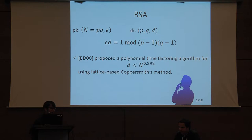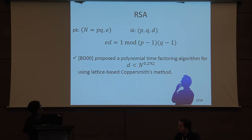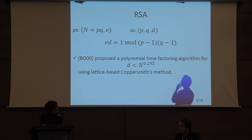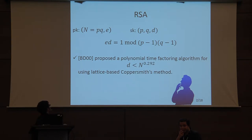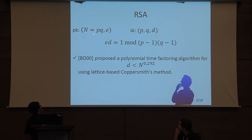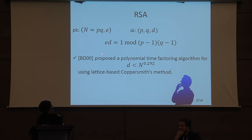We want to recall RSA. The RSA public key has two components: the public modulus N and the public exponent E. The secret key has three components: the secret primes P and Q, and the secret exponent D. N is a product of P and Q, and usually P and Q are the same bit size. The public exponent E and the secret exponent D satisfy a standard equation.